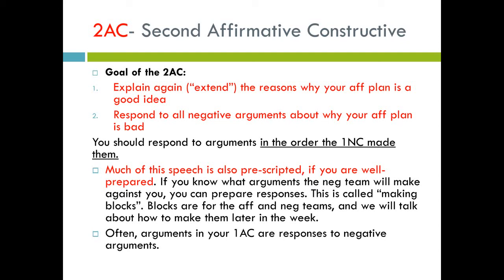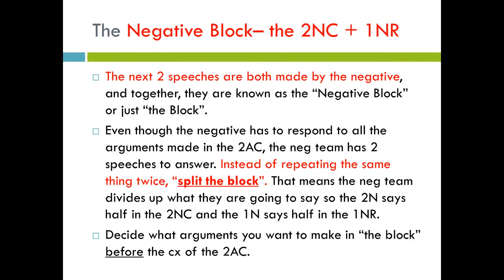The next speech is the second affirmative constructive, or 2AC, and there are two big goals. The first is to extend — explain again — the reasons why the AFT plan is a good idea. The second is to respond to all negative arguments about why your AFT plan is bad. You should respond to arguments in the order the 1AC made them. Most of the speech is also pre-scripted if you're well prepared. If you know the arguments the NEG team will make against you, you can prepare responses — this is called making blocks. Blocks are used by both the AFT and NEG teams. Often arguments in your 1AC are pre-built responses to negative arguments.